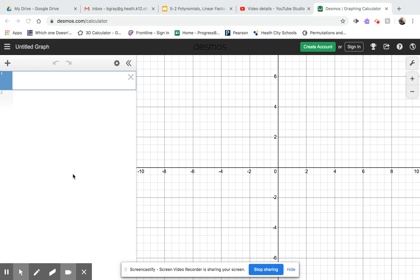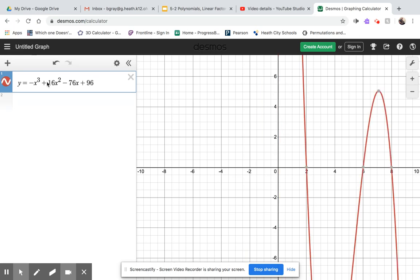I'm going to show you how to find the relative maximum and minimum values for a polynomial function using the Desmos graphing calculator. I'm going to graph the function y equals negative x to the third plus 16x squared minus 76x plus 96 on the Desmos calculator.